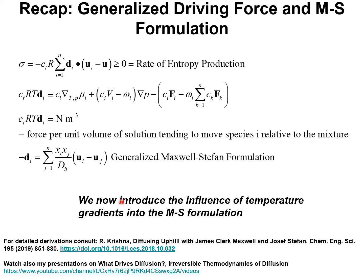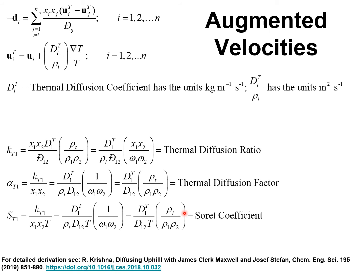Starting with this Maxwell-Stefan formulation, we introduce the influence of temperature gradients into this equation so as to be able to include the Soret effect. The most convenient way to introduce the influence of temperature gradients in multi-component mixtures is to define augmented velocities u_i^t, where the velocity for species i is augmented by a term that includes the temperature gradient.